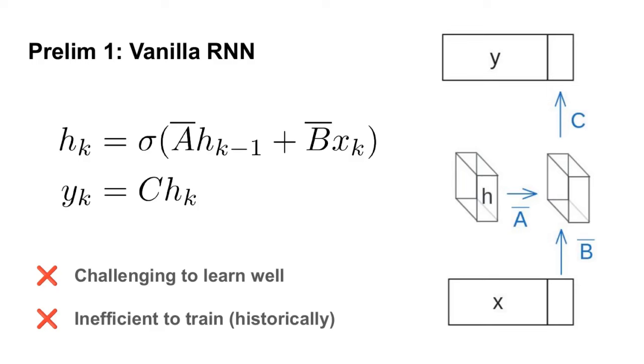A non-linearity sigma is then applied to produce the next hidden state h_k. Finally, y_k is produced by multiplying h_k by C. We're assuming here that the hidden state h might be slightly bigger than the original channels of the neural network x, but otherwise this is just a standard vanilla RNN.